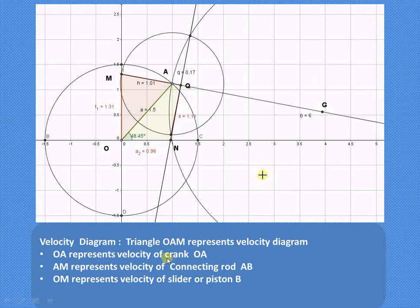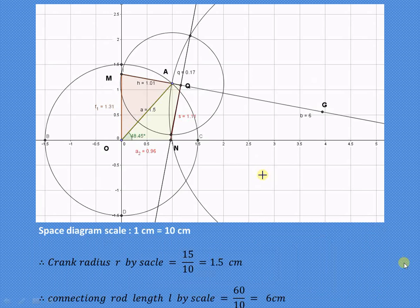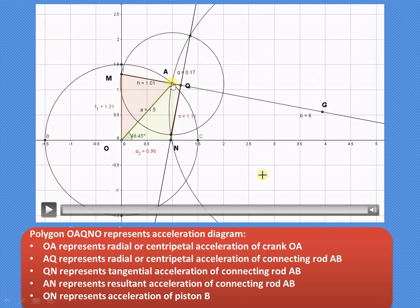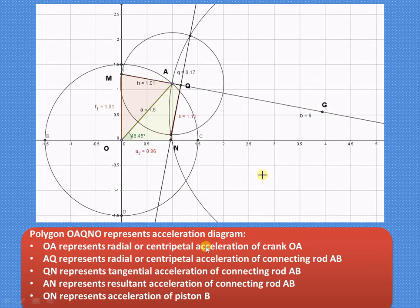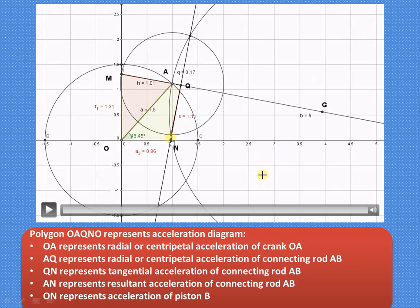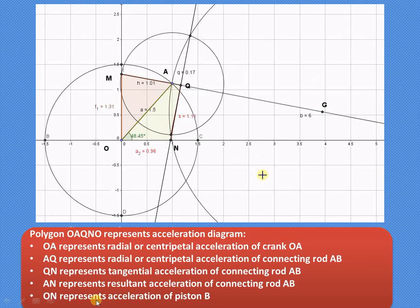In the velocity diagram triangle OAM: OA represents the velocity of the crank, AM represents the velocity of connecting rod AB, and OM represents the velocity of the slider or piston B. In the acceleration polygon OAQNO: OA represents the radial (centripetal) acceleration of the crank, AQ represents the radial acceleration of connecting rod AB, QN represents the tangential acceleration of the connecting rod, AN is the resultant acceleration of the connecting rod, and ON represents the acceleration of the piston.